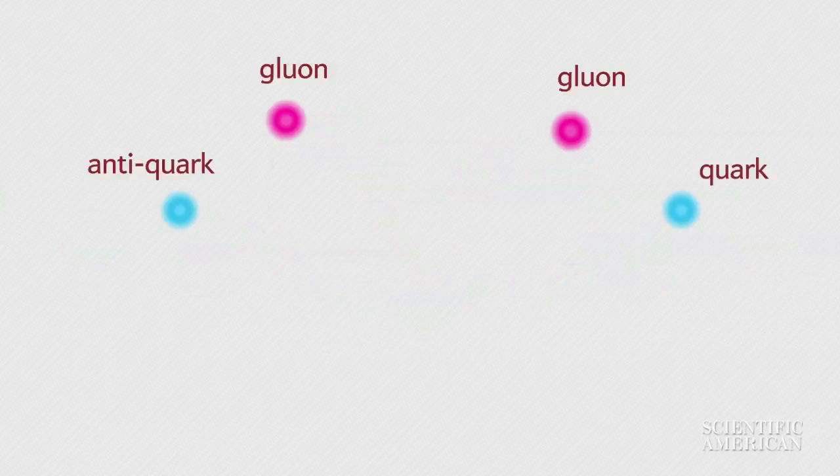The collision can occur in a huge number of different ways. In this case, one gluon from each proton collides. The reaction produces two quarks and two gluons, which fly off in four separate directions. This is the main collision, also called the hard or short-distance scattering.